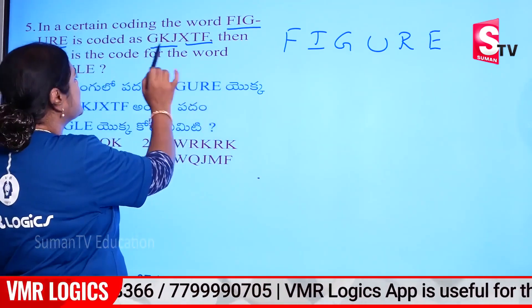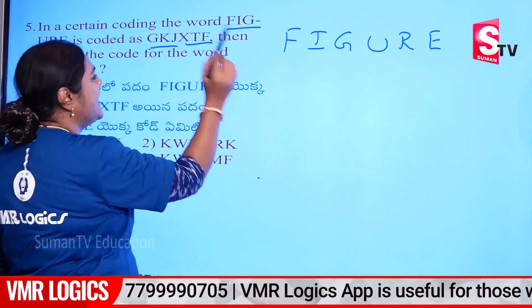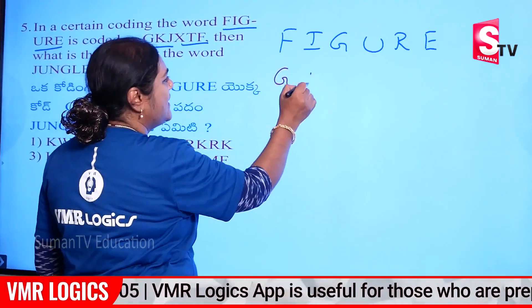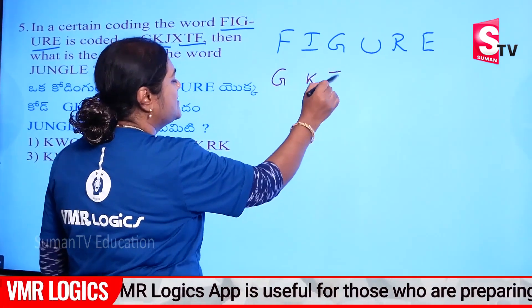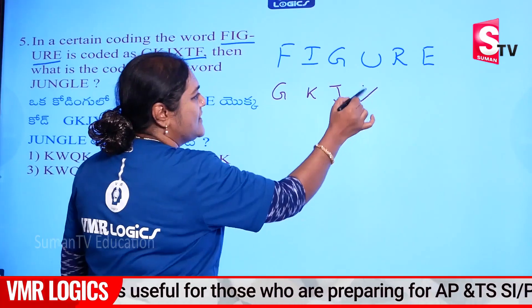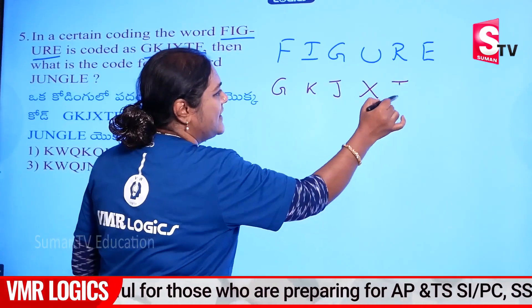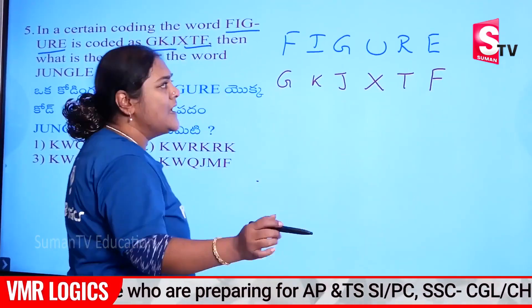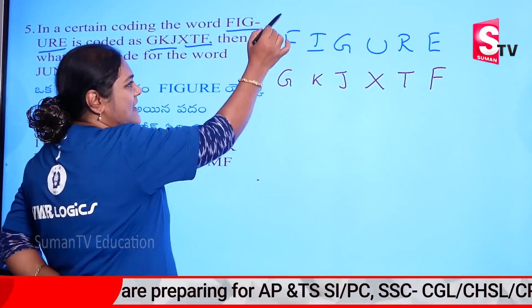Here it is: G, K, J, G, K, J, X, T, F, X, T, F. Now the code here.